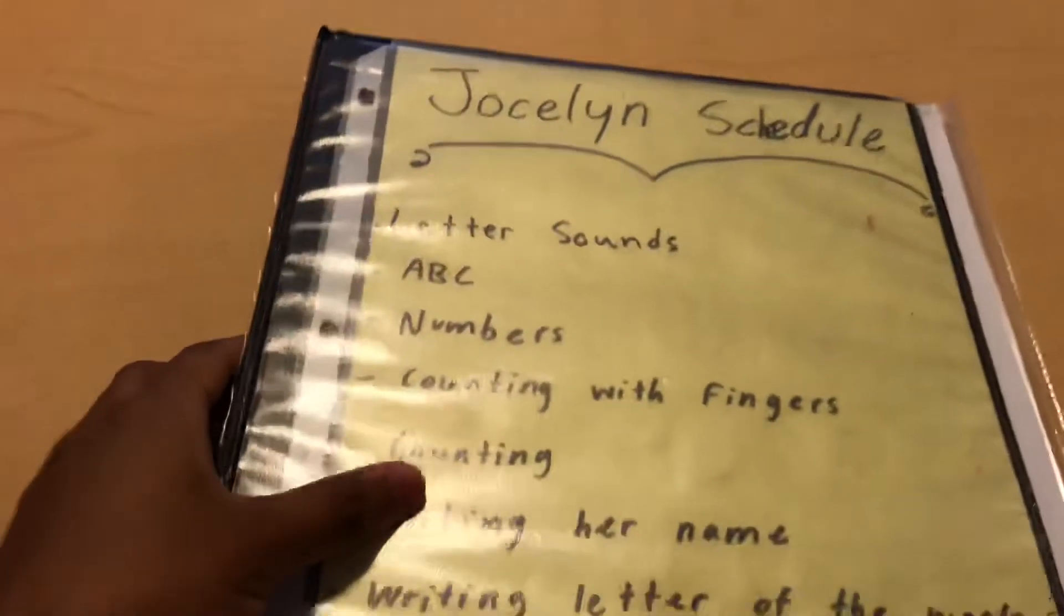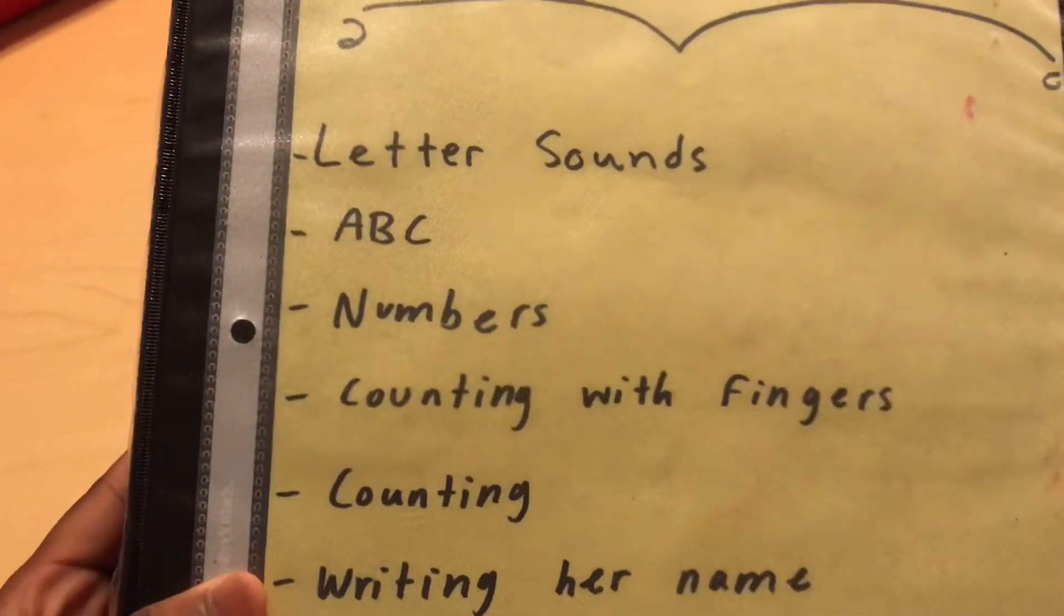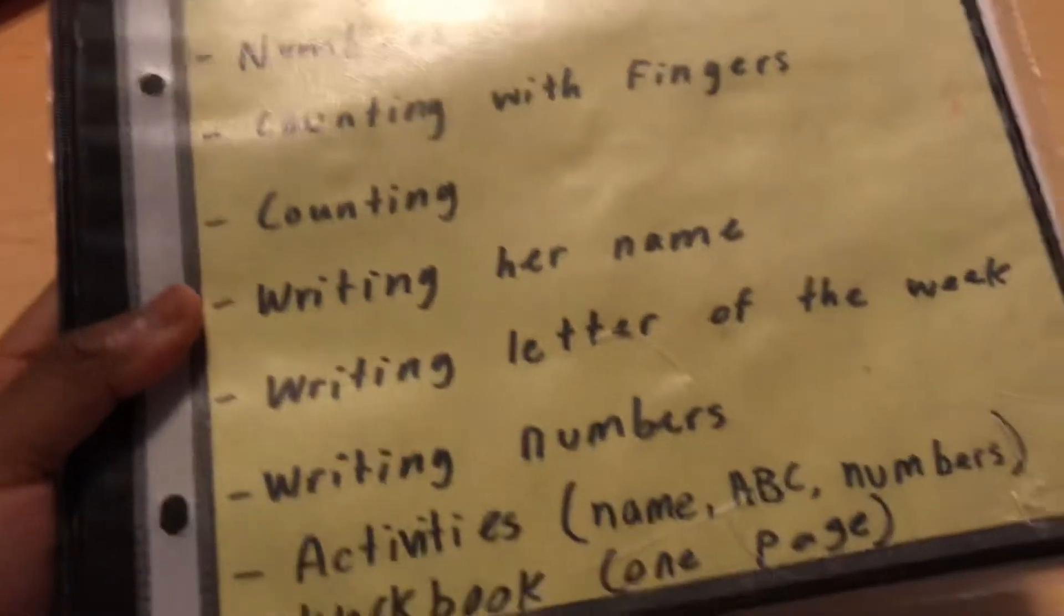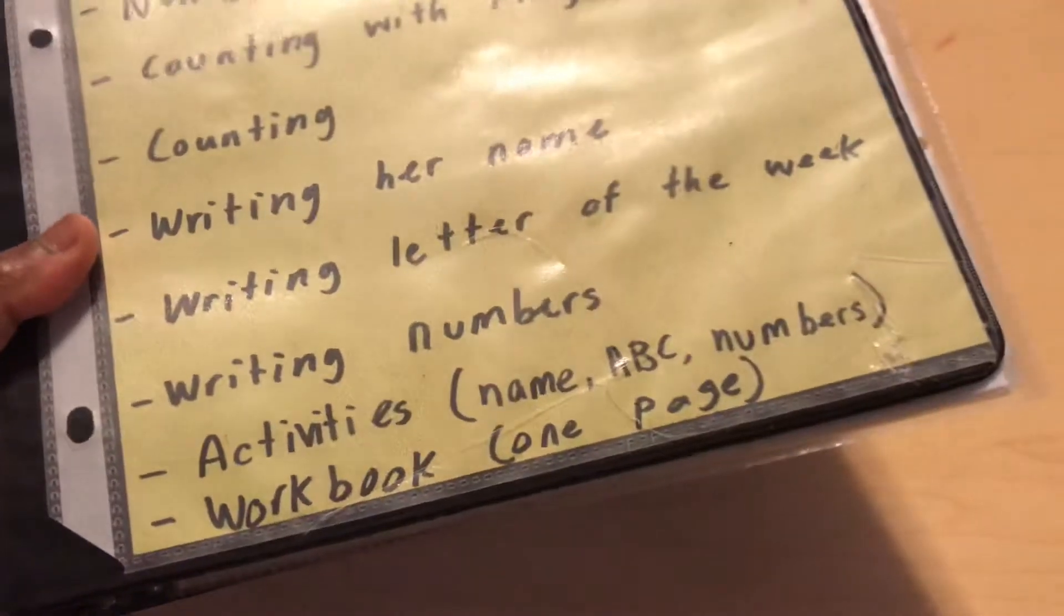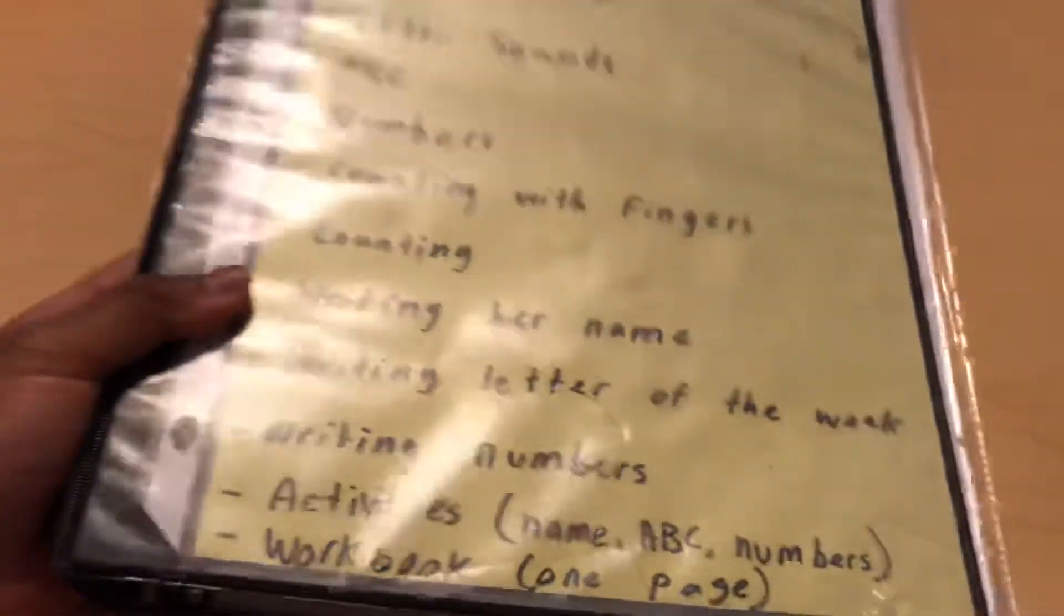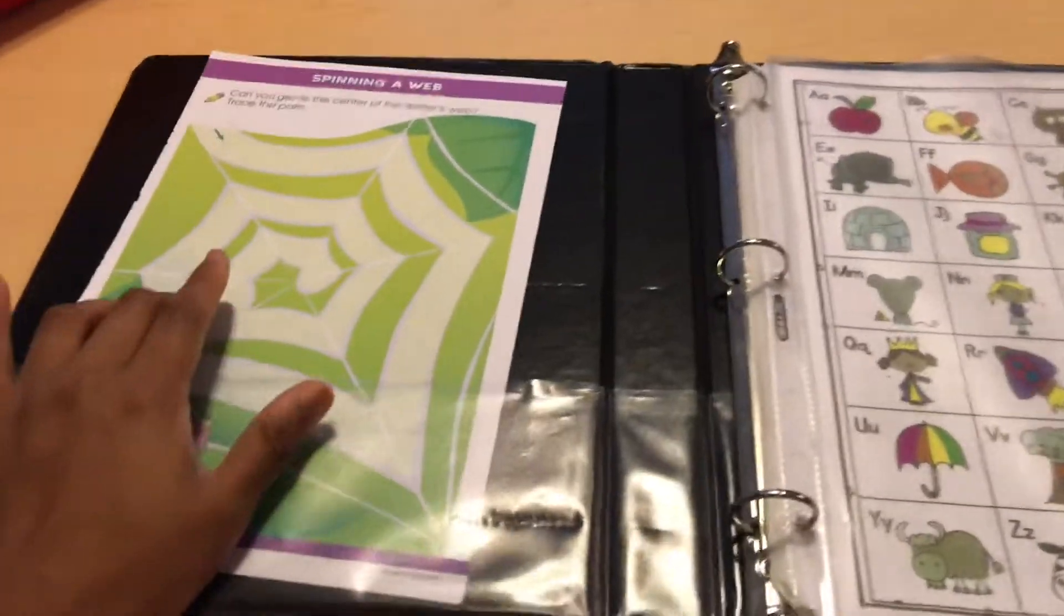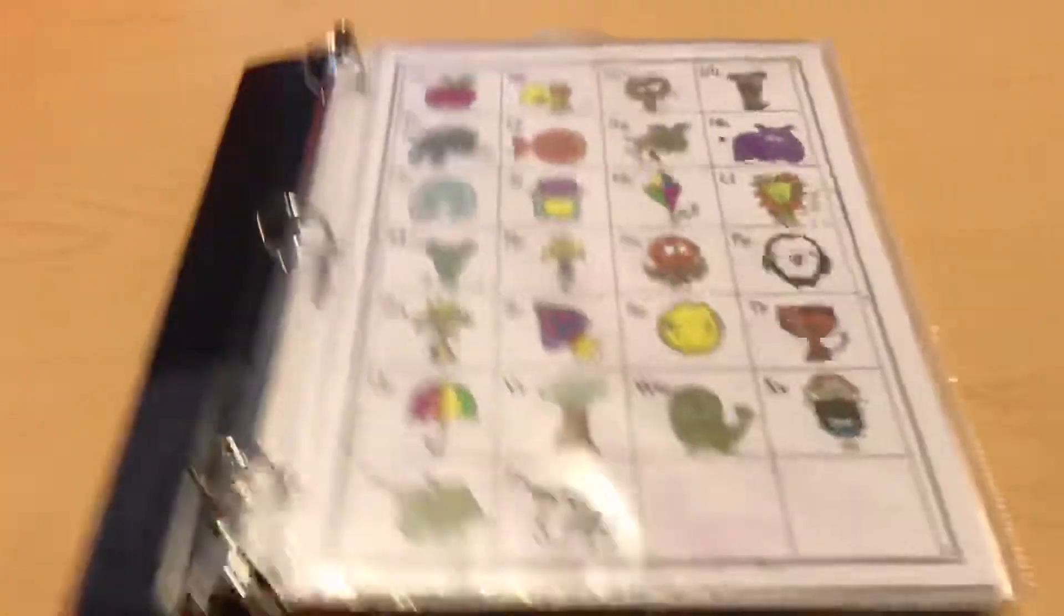First thing, this is her schedule and we do this every single day. So here's her name, Jocelyn's schedule. We go over letters, sounds, the ABC, numbers, counting with fingers, counting, writing her name, writing letters of the week, the letter of the week, writing numbers, activities, and a workbook. One page from a workbook. This is the workbook that we use, but I'll go into that in a little bit.